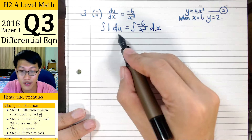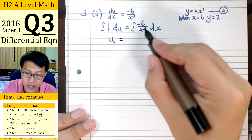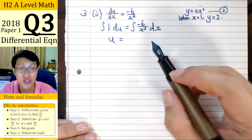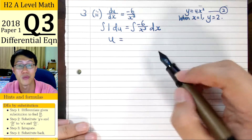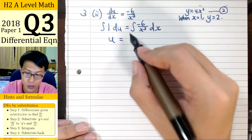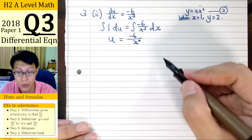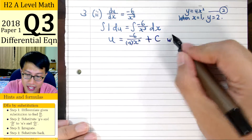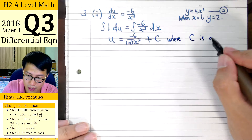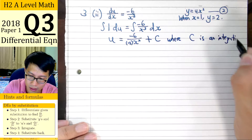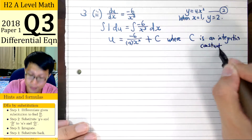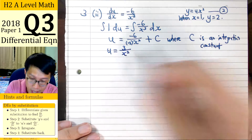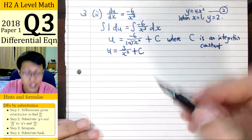Integration of 1 with respect to u gives us u. For the right side, minus 6 is a constant. We rewrite x cubed as x to the power minus 3, then integrate: bring the power up to minus 2 and divide by minus 2. So we have minus 6 times x to the power minus 2, divided by minus 2, plus the integration constant c.